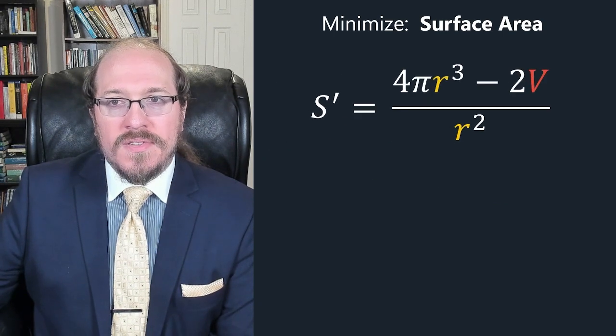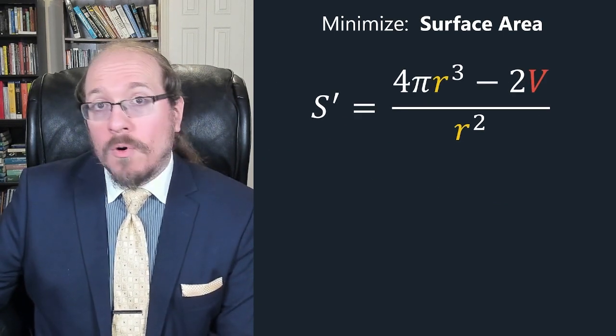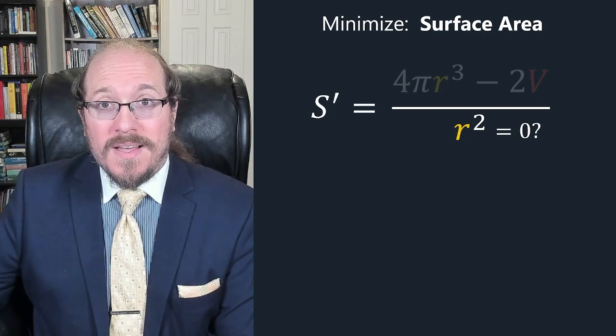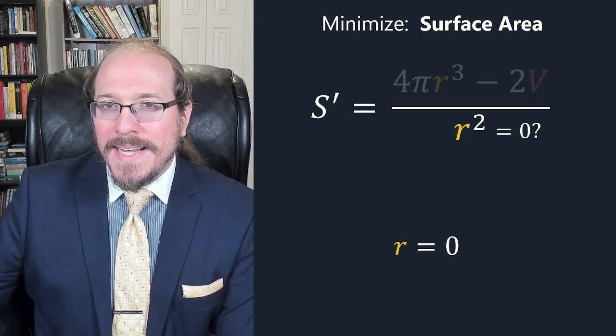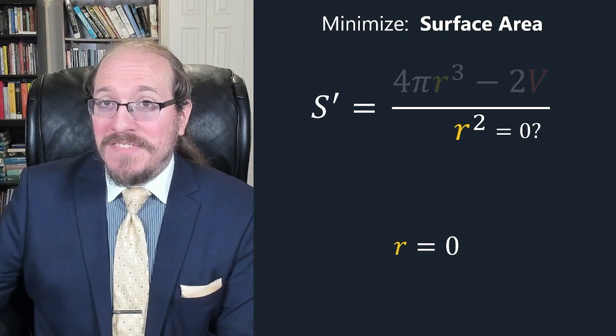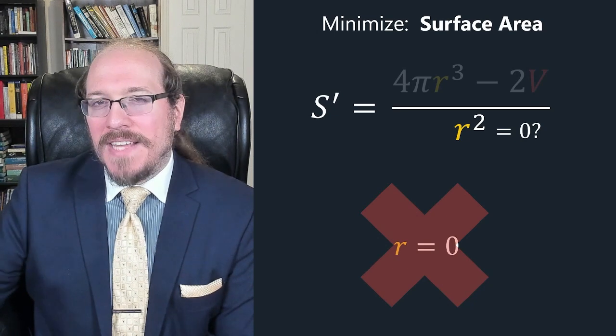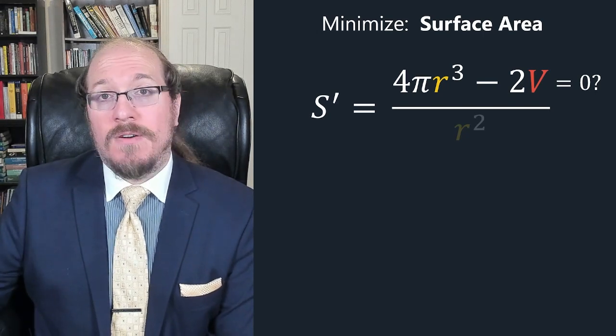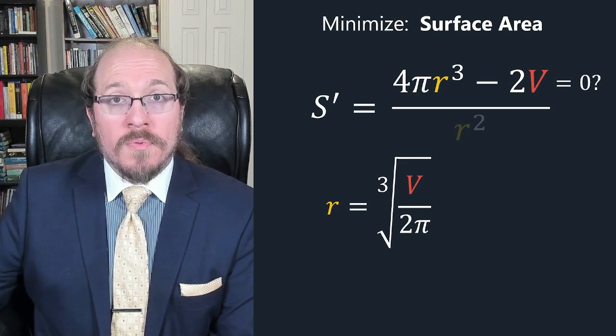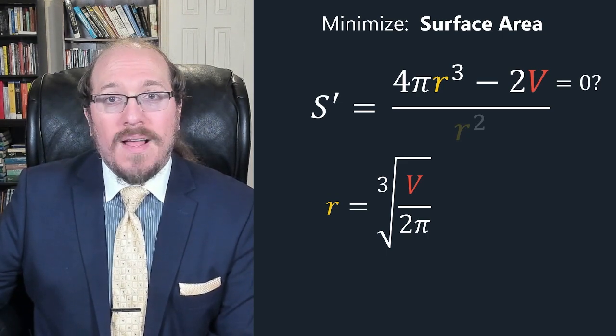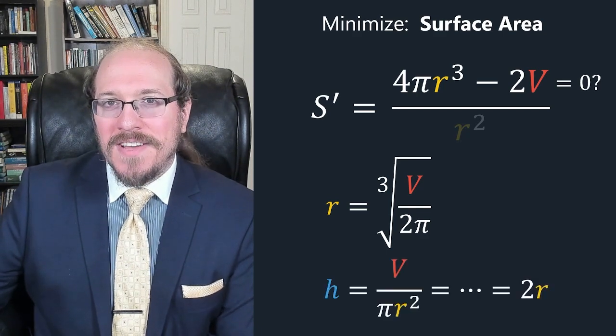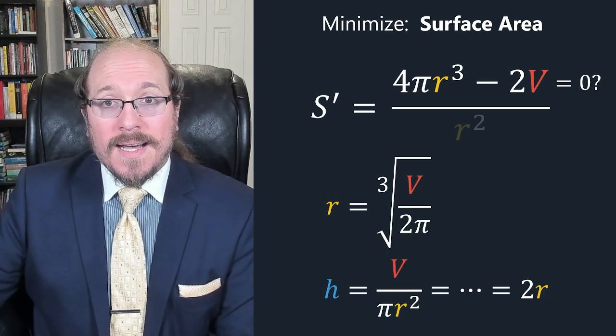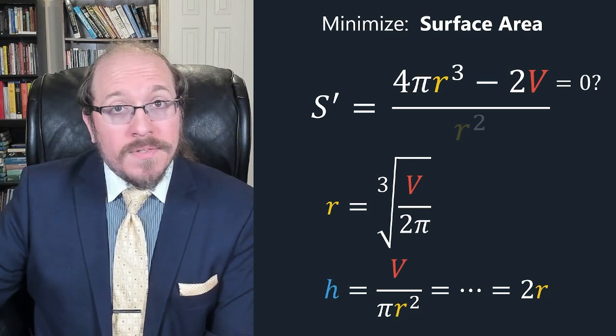Now the critical values of the surface area are where this derivative here is 0 or undefined. If the denominator is 0 then the derivative is certainly undefined. But if you think about it that would mean the radius of the can is 0 which means we really wouldn't have much of a can at all. So we can probably safely ignore this as a possibility. But if the numerator is 0 then the whole derivative is 0. So if we solve for r here we get the cube root of V over 2π. That's our critical value. And interestingly enough if we plug that back in to find the height and you should take a bit to work through the algebra and check then we get that the height should be exactly double the radius. That is equal to the diameter.